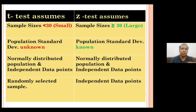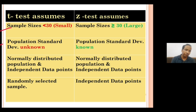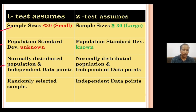The sample size should be less than 30 in case of T-test. Here with two samples, both should be less than 30, whereas in case of Z-test it should be 30 or more. Population standard deviation is unknown in case of T-statistic, whereas in case of Z-statistic it is known. In both cases, the population should be normally distributed, data points should be independent, and the sample should be randomly selected.